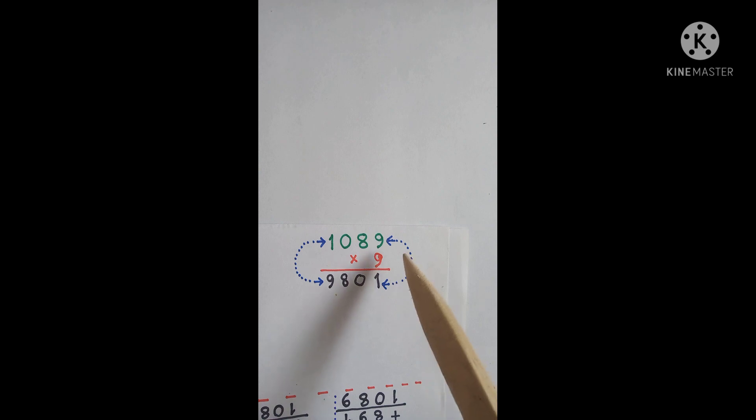Can you see any pattern or any similarity between the number 1089 and 9801? I guess you can. And what is it? Simply 1089 and 9801 are the reverse of each other.